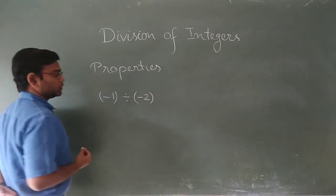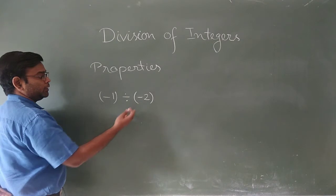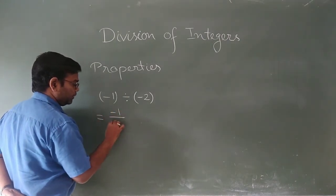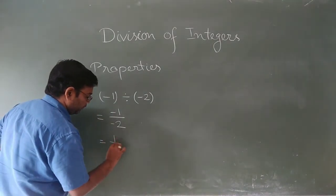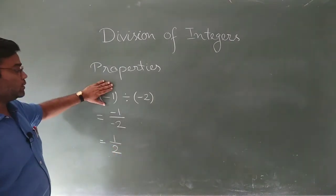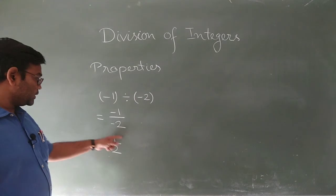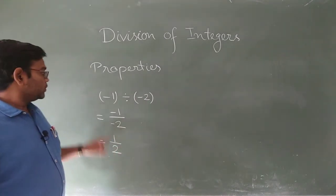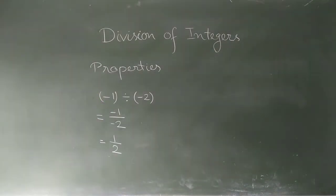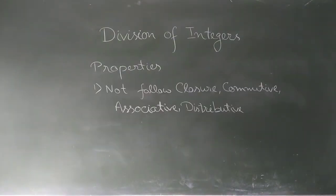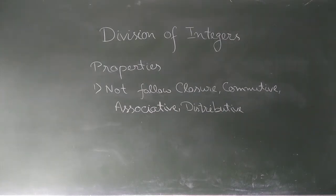Minus one divided by minus two — negative divided by negative gives a positive result, so we get one upon two. Here minus one and minus two are both integers, but one-half is not in integer form. That's why division of integers does not follow the closure property, and it also does not follow commutative, associative, or distributive properties.